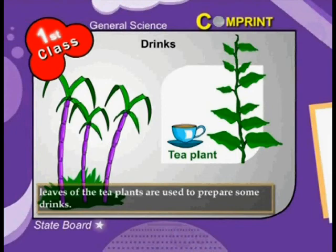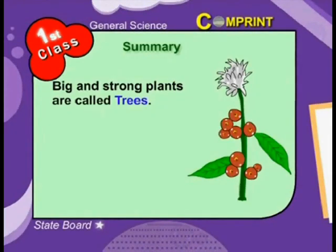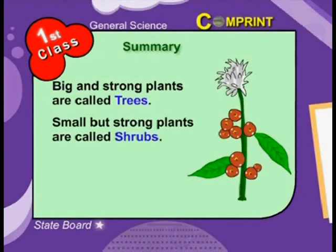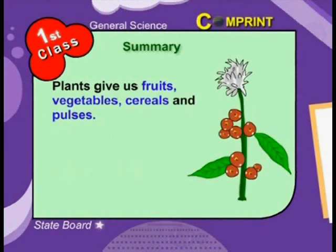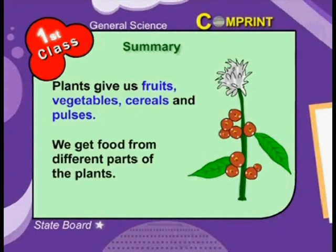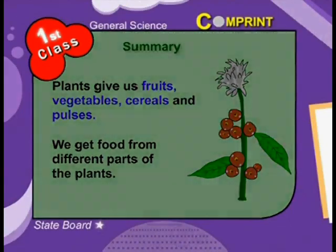Let us summarize the points. There are different types of plants. Big and strong plants are called trees. Small but strong plants are called shrubs. Small and weak plants are called herbs. Plants give us fruits, vegetables, cereals, and pulses. We get food from different parts of the plant.